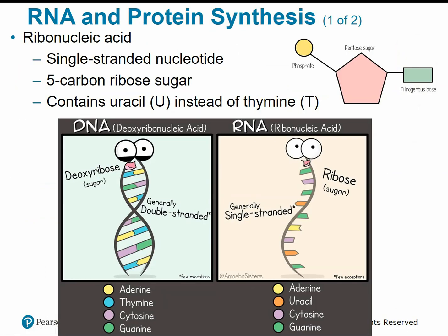RNA is another nucleic acid similar to DNA and very important in protein synthesis. RNA stands for ribonucleic acid because it's composed of a ribose sugar — in DNA, the D was for deoxyribose. Both are five-carbon sugars; the deoxyribose is just missing an oxygen. All nucleic acids, RNA and DNA, are composed of nucleotides — a five-carbon sugar (ribose or deoxyribose), a phosphate group, and one of four bases. In DNA, the bases are A, T, C, and G. RNA uses uracil in place of thymine, so adenine pairs with uracil in RNA.